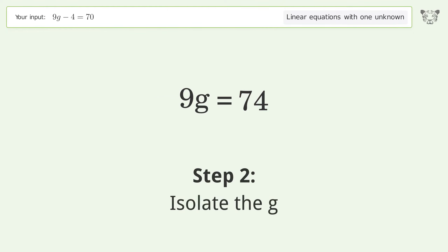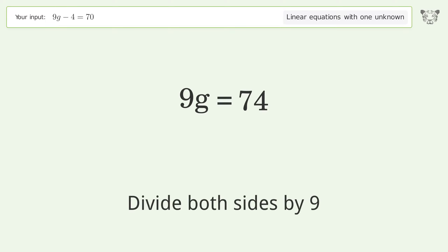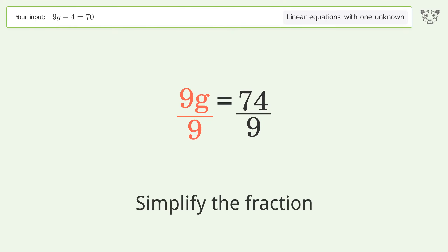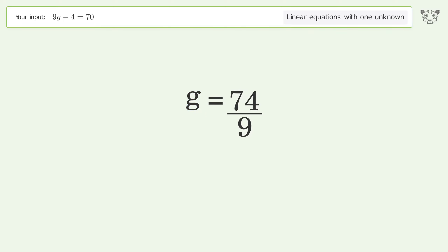Isolate the g. Divide both sides by 9. Simplify the fraction. And so the final result is g equals 74 over 9.